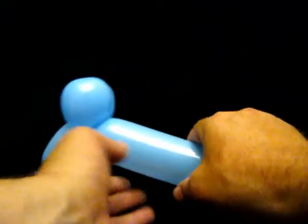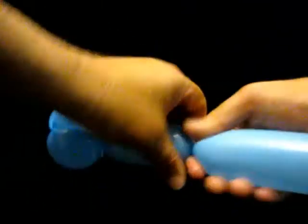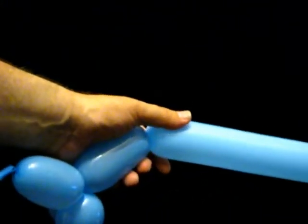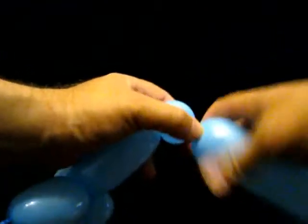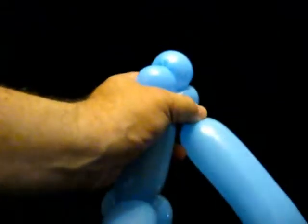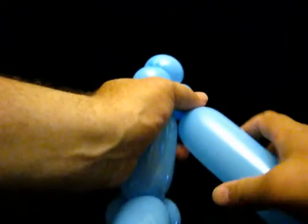We then make a neck about 4 inches long. Then comes the distinguishing characteristic of this figure. We're going to make a series of six 1-inch bubbles. You'll notice that as I do this, I twist these bubbles a lot.